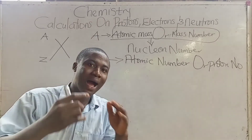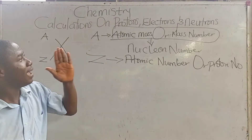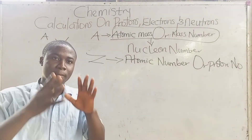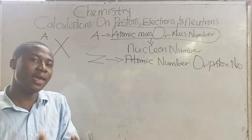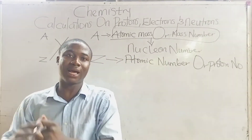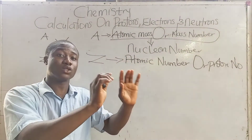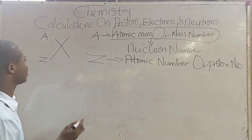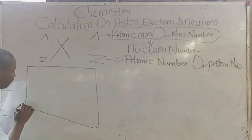The question you ask yourself is: how do I calculate the numbers of protons, electrons, and neutrons of an atom? It must be noted that for a neutral atom there are some formulas you apply, and for a charged atom there are different formulas you apply.